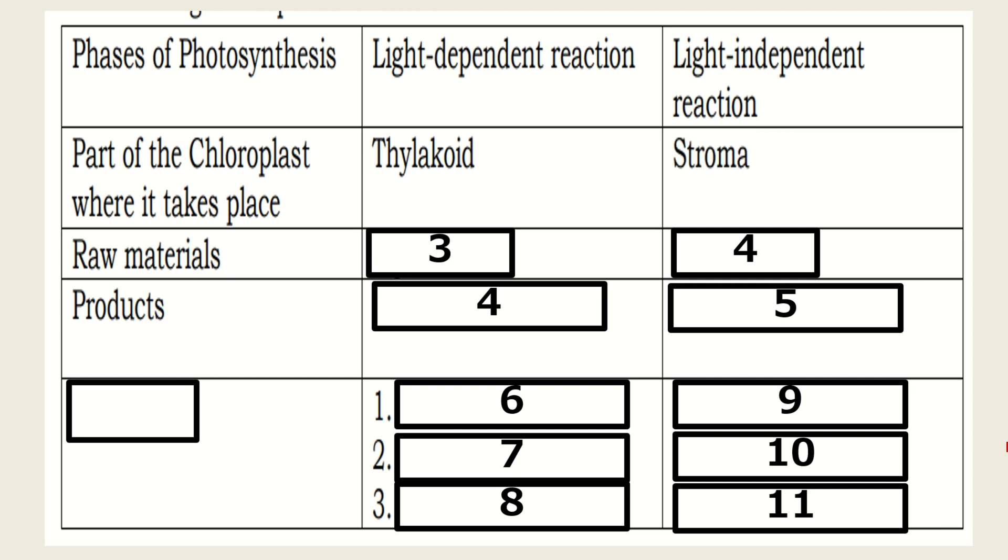The raw materials or the reactants for light-dependent are light and water. However, in the light-independent, the reactants or the raw materials are NADPH and ATP.